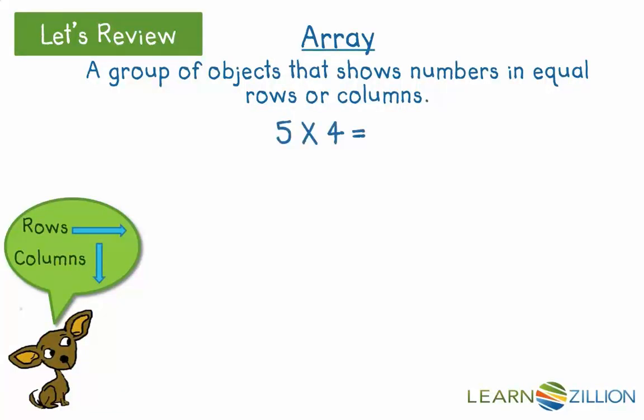To show 5 times 4 in an array, the 5 tells us how many rows or columns to draw, and the 4 tells us how many objects to draw in each row or column.